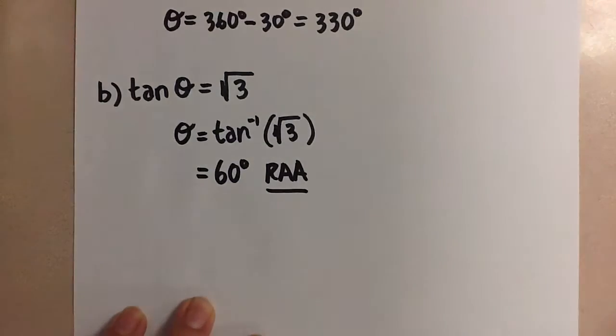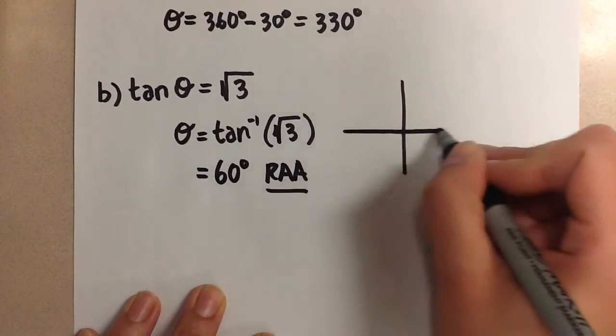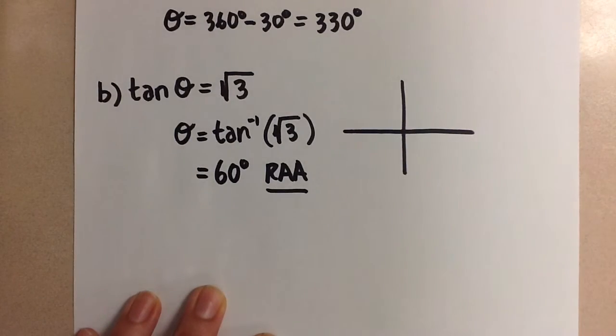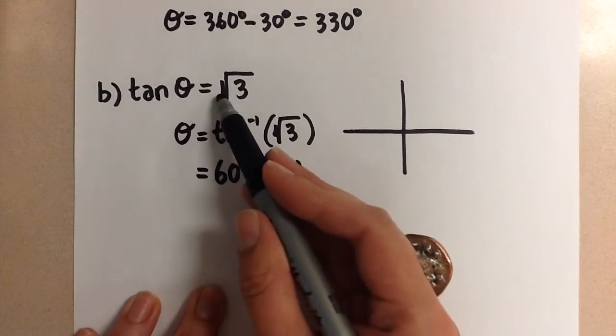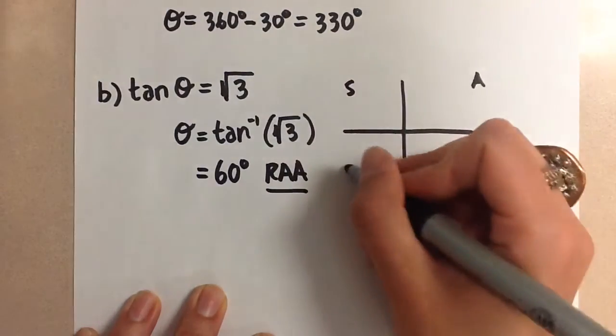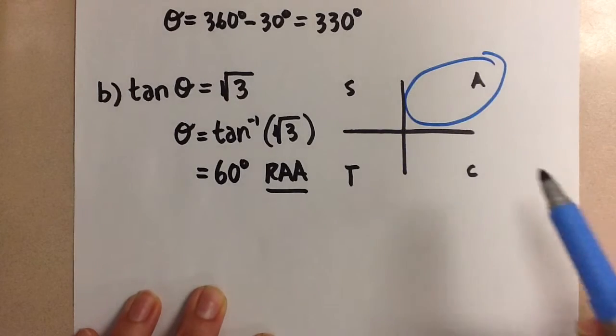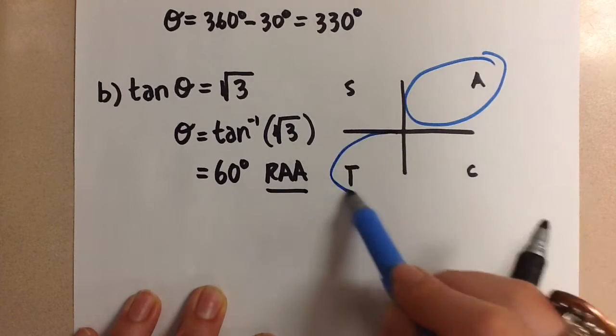But again we need to figure out which two quadrants this related acute angle is going to go in. So tangent here is positive and looking at our CAST rule, the two quadrants where tangent is positive will be the first quadrant and the third quadrant.